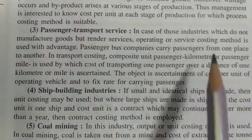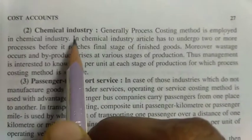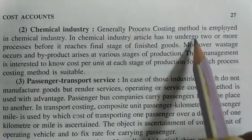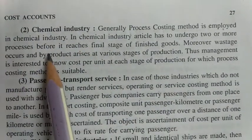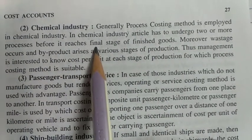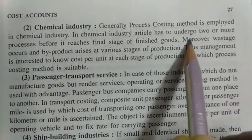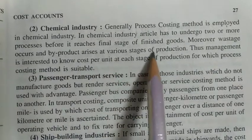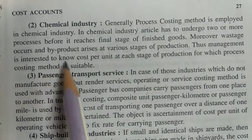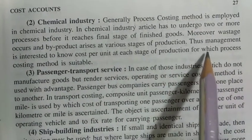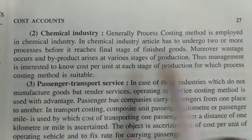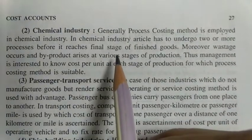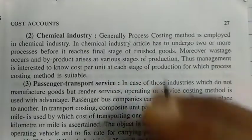For chemical industries, generally the process costing method is employed because articles undergo two or more processes before reaching the final stage of finished goods. Moreover, wastage occurs and by-products arise at various stages of production. Management is interested to know the cost per unit at each stage of production, for which the process costing method is suitable.